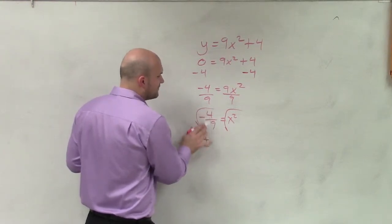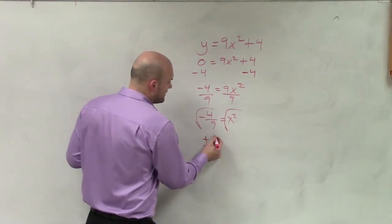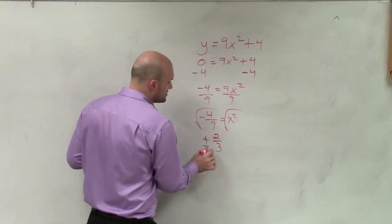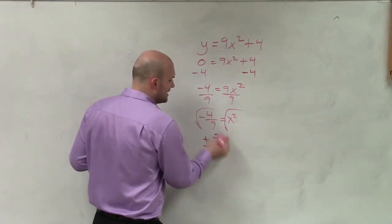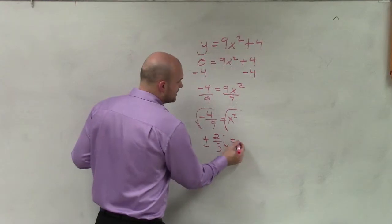So since I can take the square root of the positive 4/9, I will have that as 2/3, always plus or minus. And taking the square root of negative 1 will be i equals x.